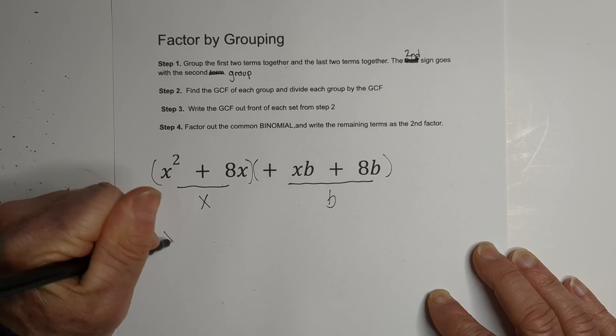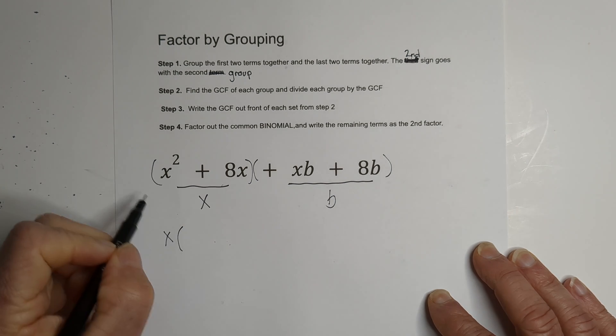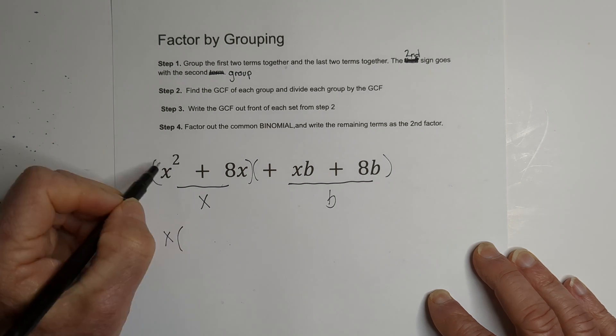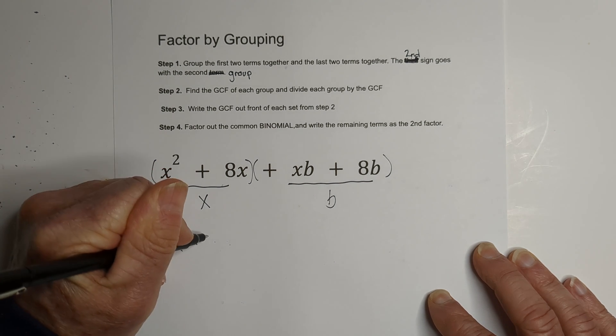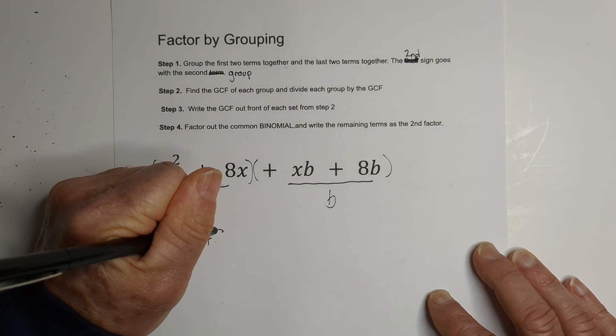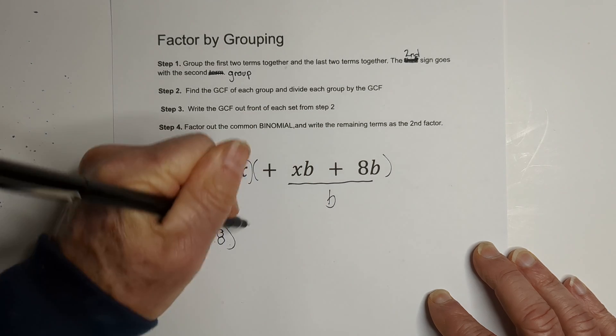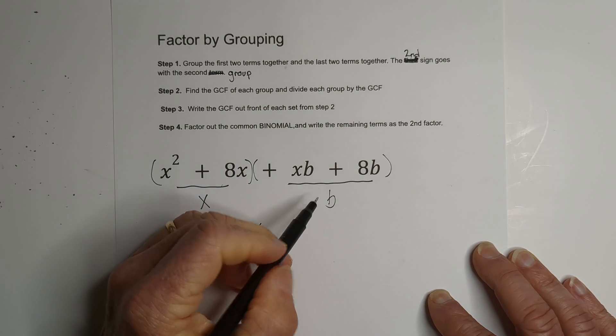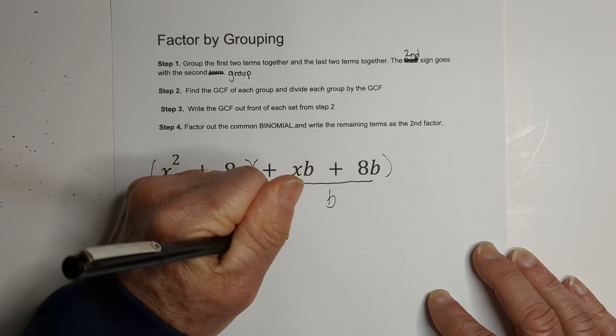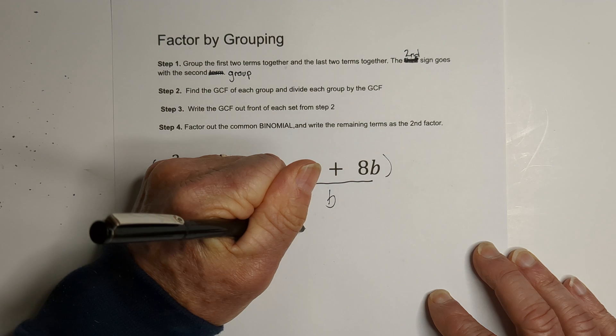Next, we're going to write the GCF out front. And we're going to divide this. Basically, we're factoring by using the GCF. So this becomes x plus these x's cancel. So we have 8. And then we're going to write the b out front. And the b's cancel. So we're left with x plus these b's cancel. And we have 8.